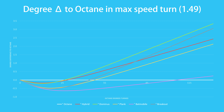Earlier we calculated the best turning cars based on an average quarter second turn. What result do we get with this data? I did adjust this to make the average turn 50 milliseconds longer, because that's how long it takes for most cars to stop turning in the previous direction. The octane is now the winner by about 2% ahead of the hybrid, which is closely followed by the dominus. A further 2.5% to 3% behind are the plank, batmobile, and breakout.